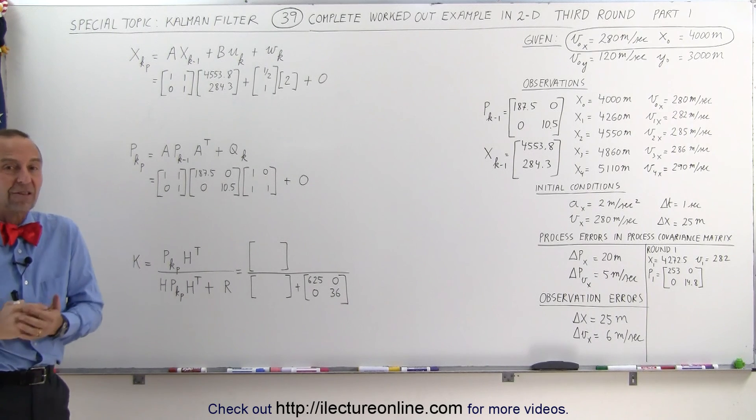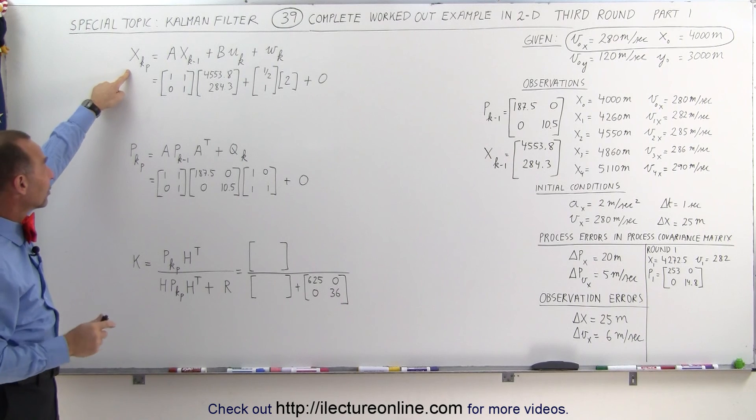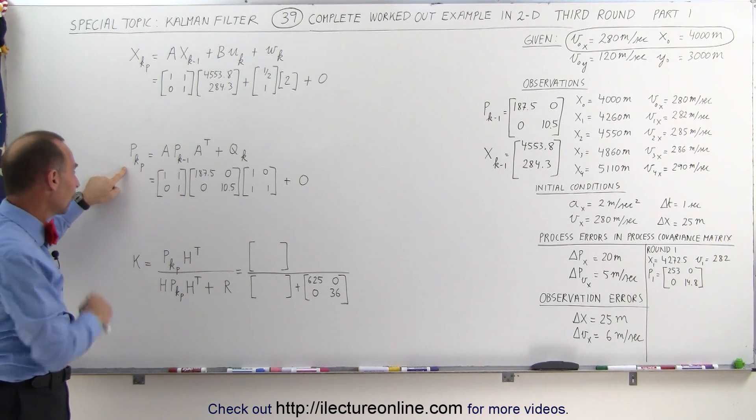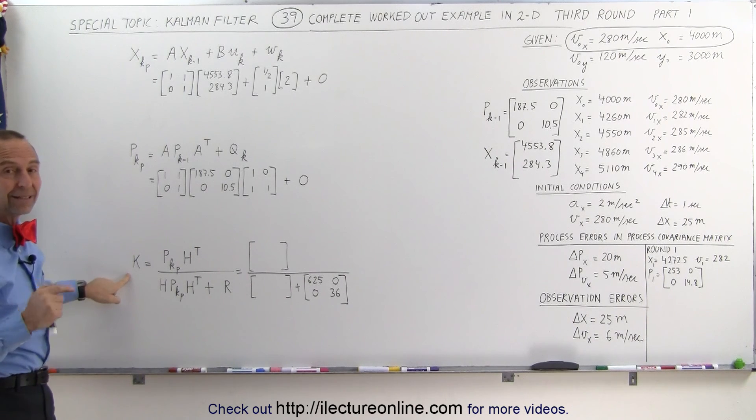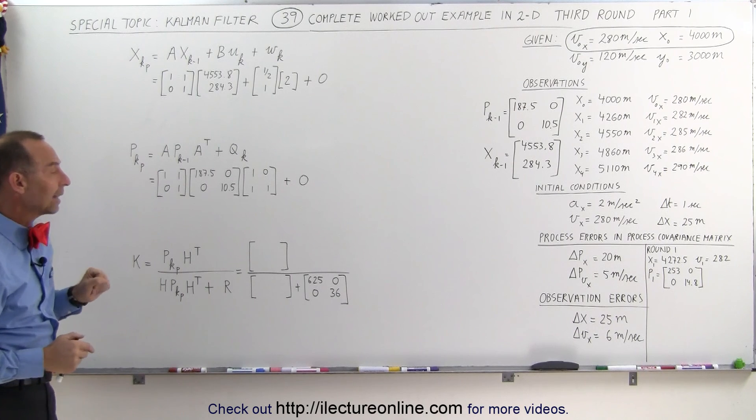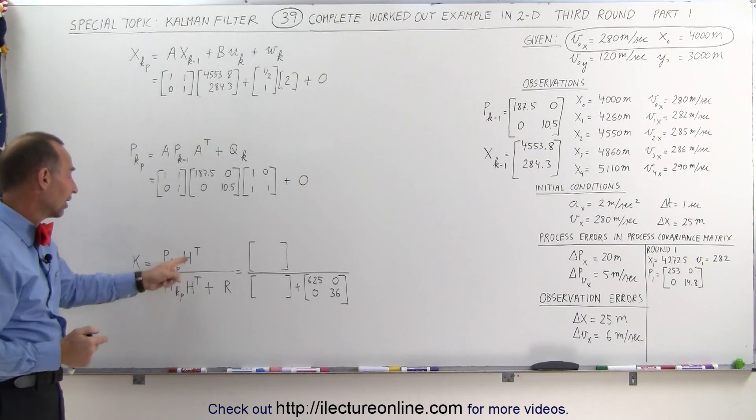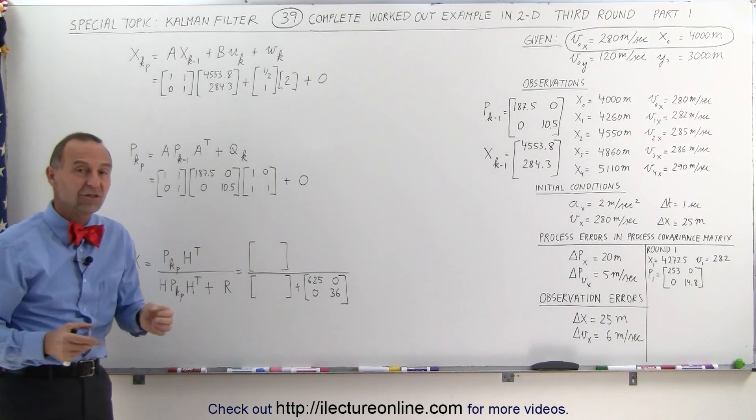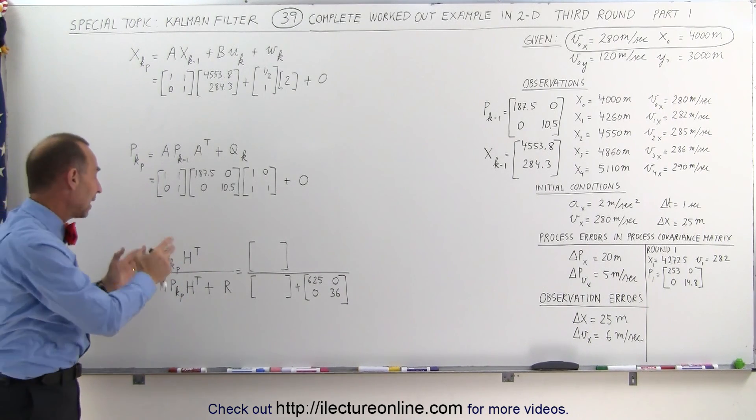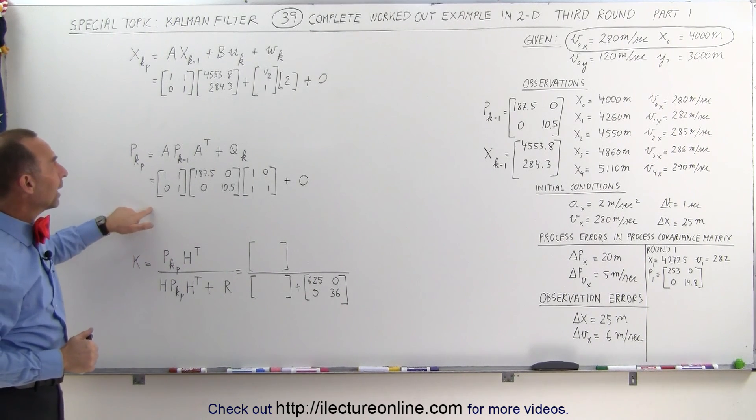We're going to do it a little bit faster now. So the first three major steps: we're going to calculate the predicted state matrix, we're going to calculate the predicted process covariance matrix, and we're going to calculate the Kalman gain. And those are the equations we need to use to do that. We're going to simplify a little bit now realizing that in a lot of cases, like in this case, the H matrices are simply identity matrices because they're only used to convert the format of one to the other, and in this case it's very simplistic.